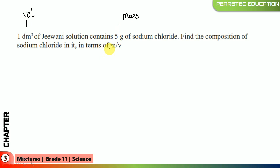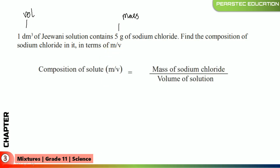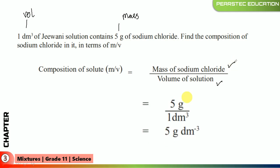Find the composition of sodium chloride in terms of mass-volume fraction. The composition expressed as MV is always equal to mass of sodium chloride divided by volume of solution. We already have the volume of solution and the mass of sodium chloride. Simply apply it: 5 grams over 1 cubic decimeter. The answer is 5 grams per cubic decimeter.